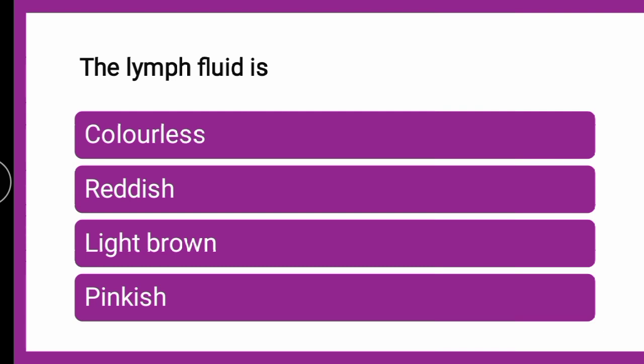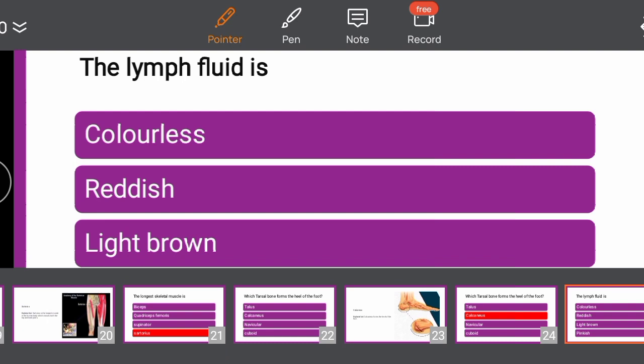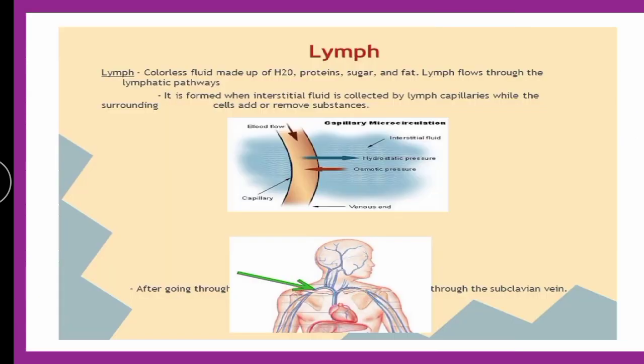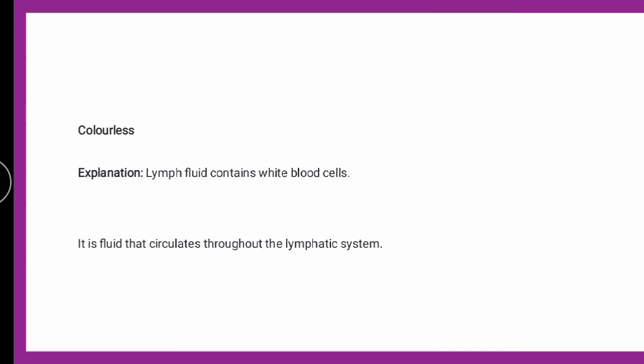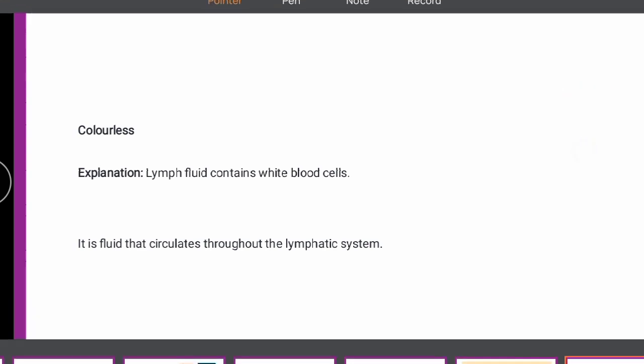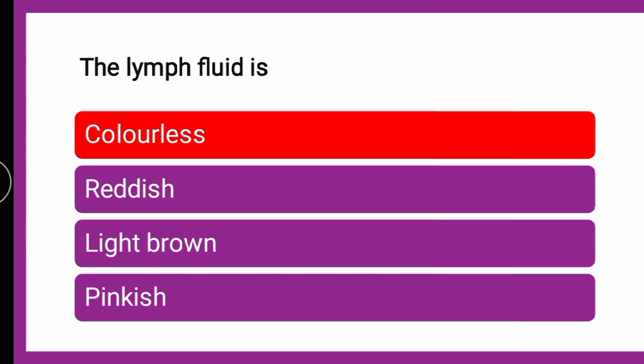The next question is: the lymph fluid is — whether colorless, reddish, light brown, or pinkish. The lymph is a colorless fluid made up of water, protein, sugar, fats, etc. The lymph fluid contains WBCs and circulates throughout the lymphatic system. So the correct answer is colorless — the lymph fluid is colorless.